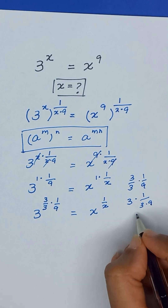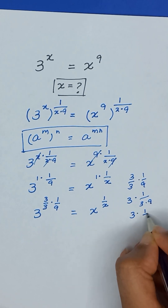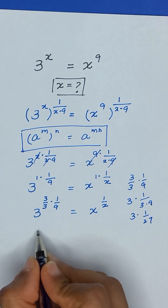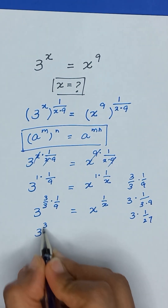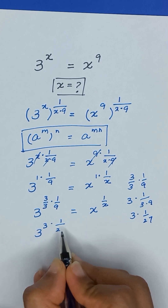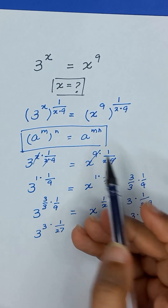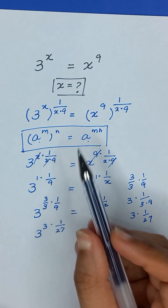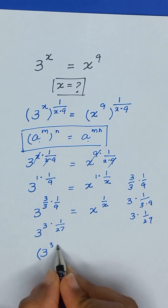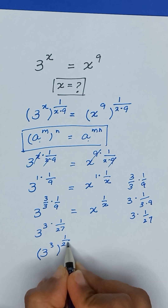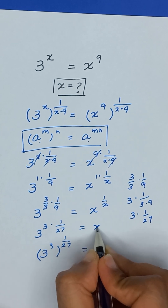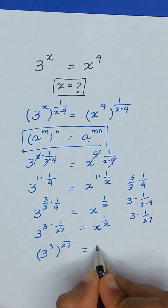So it will become 3 to the power 1 divided by 27, which we can write as 3 to the power 3 times 1 divided by 27. Again, we will use the exponential rule, so we can write it as 3 to the power 3, whole power 1 divided by 27, is equal to x to the power 1 divided by x.